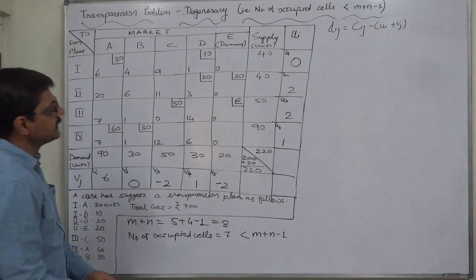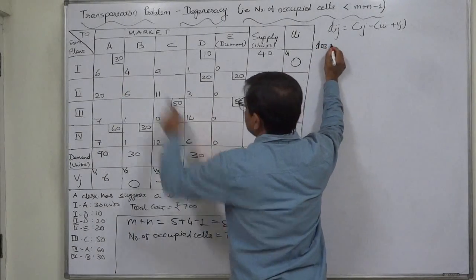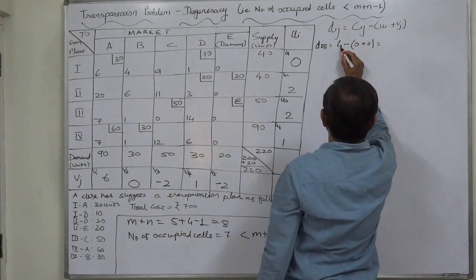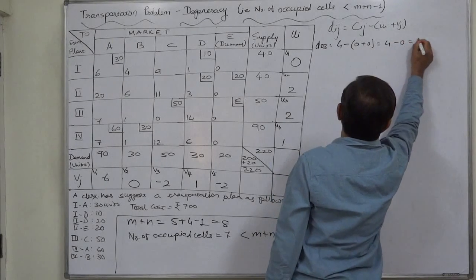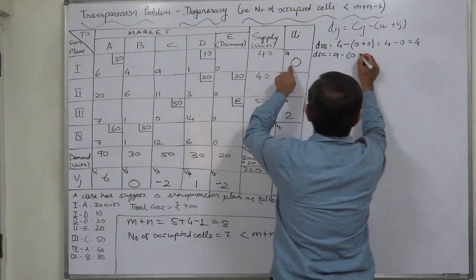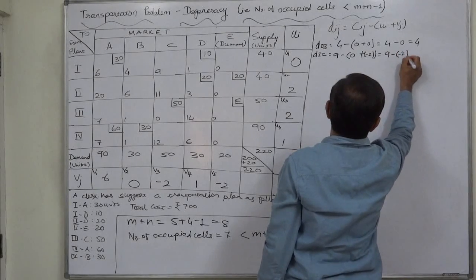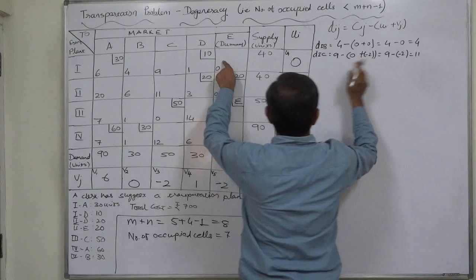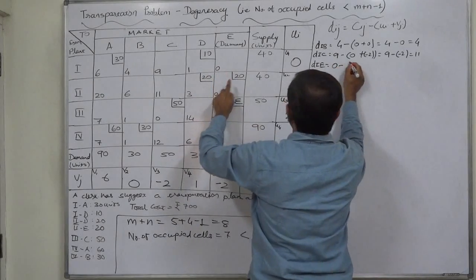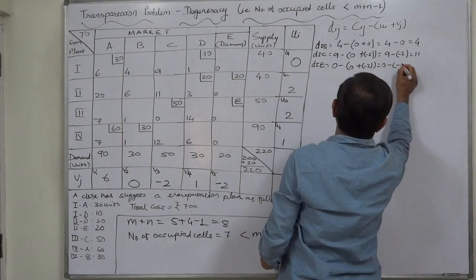Now we can calculate all dij values. For cell 1b: d(1b) = c minus ui minus vj = 4 minus 0 minus 0 = 4. For cell 1c: d(1c) = 9 minus 0 minus (minus 2) = 9 plus 2 = 11, positive. For cell 1e: d(1e) = 0 minus 0 minus (minus 2) = 0 plus 2 = positive 2.